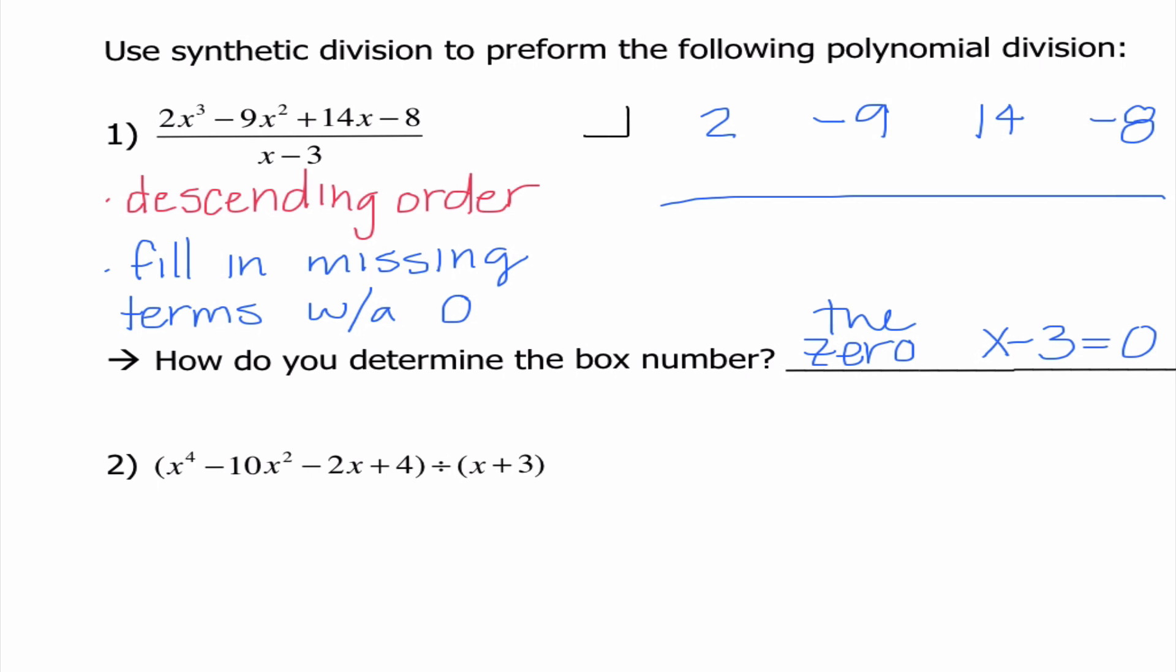And I need to know when is x minus 3 equal to 0? It is when x equals 3. So what we will notice is it's always the opposite of this number, but the real reason why we use it is because it is the 0.